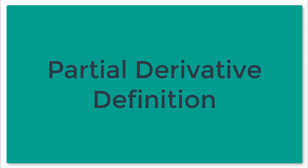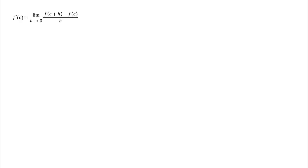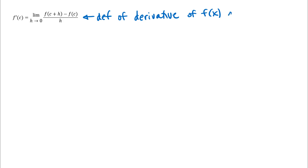In this video, we're going to look at the definition of partial derivatives for multivariable functions. First, though, we're going to start with what I've written here, which hopefully you recognize as the definition of the derivative for a single variable function. This one is written at a specific point at x equals c. I'm going to draw a little picture of what that represents because that's going to help you understand what partial derivatives for multivariable functions represent.